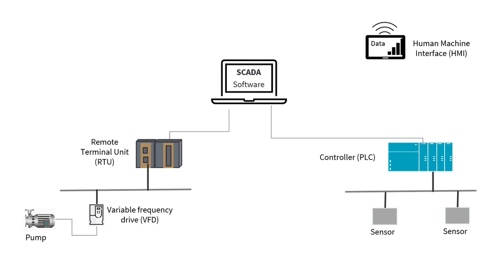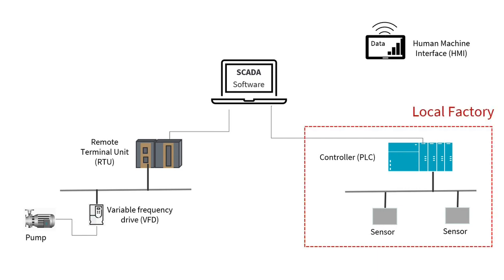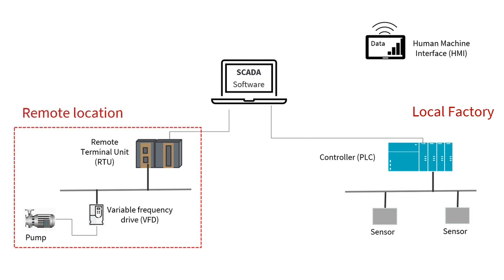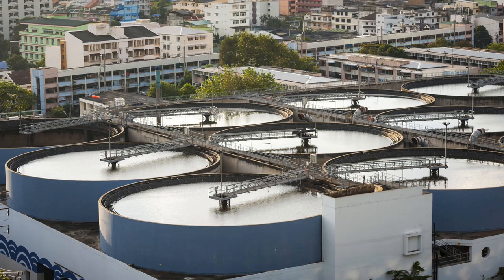For example, you see on the screen a PLC and sensors on your right-hand side in a local factory. And on your left-hand side, a remote terminal unit, RTU, connected to a variable frequency drive that is connected to a pump. An RTU is a microprocessor-based device that monitors and controls field devices, and is usually used in remote locations like pump stations or wastewater treatment locations.